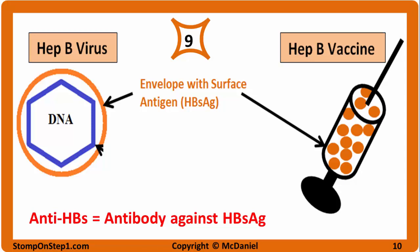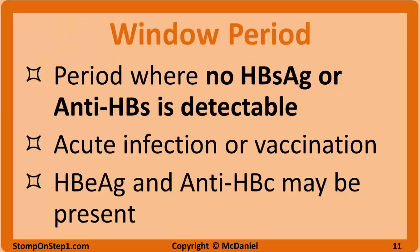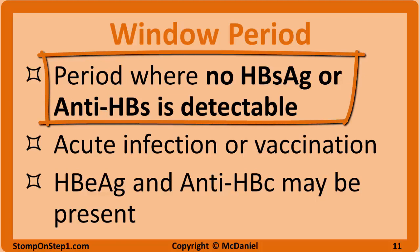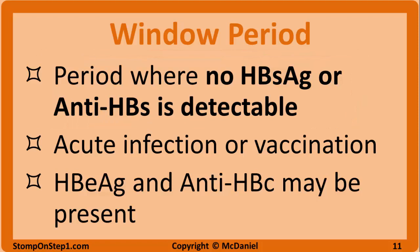The window period is a short period during acute infection or vaccination when there is no surface antigen or surface antibody found on serum testing. Both are present, but they are bound together and therefore are not detectable by the test. Essentially, the ratio of antigen to antibody is just right so that everything is bound up. During this period, one could accidentally misdiagnose a patient as not having hepatitis B. However, the window period isn't completely empty of all markers — the E antigen and core antibody may be present during the window period.